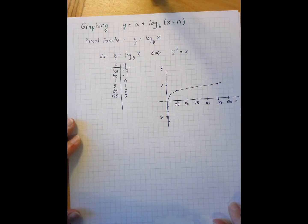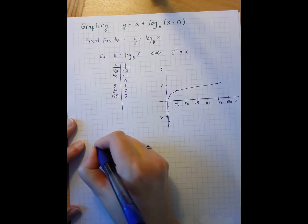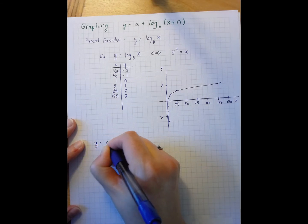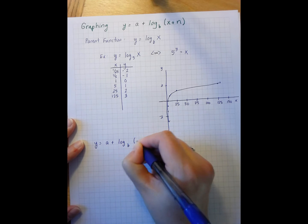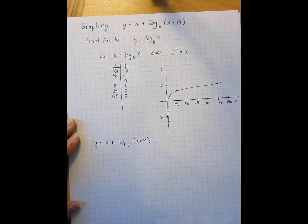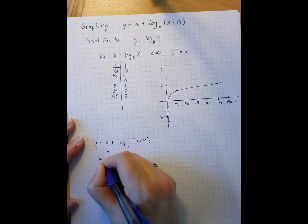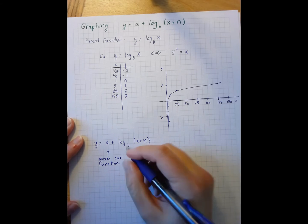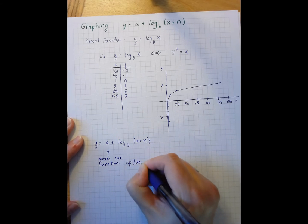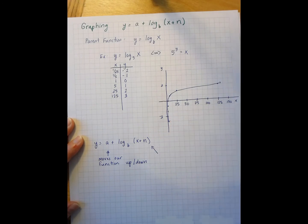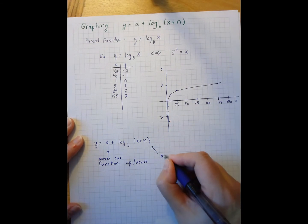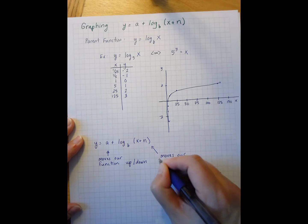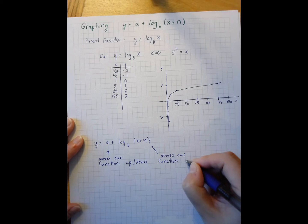Now let's look at what happens when we have y equals a plus log base b of x plus n — very similar to quadratic functions from Math 2. This a moves our function up and down, and this n moves our function left and right.